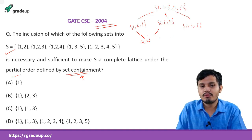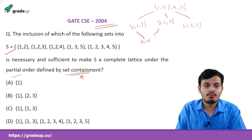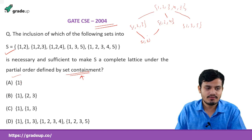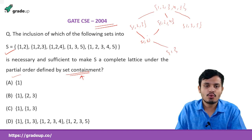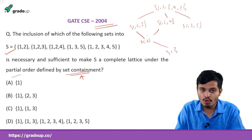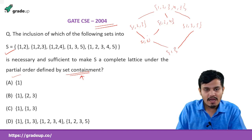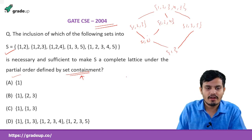Drawing the Hasse diagram: {1,2} connects to {1,2,3} and {1,2,4}. Then {1,2,3} and {1,2,4} connect to {1,2,3,4,5}. We also have {1,3,5} connecting to {1,2,3,4,5}. Note that {1,2} is not related to {1,3,5} because {1,2} is not a subset of {1,3,5}. In a Hasse diagram we don't draw transitive edges.